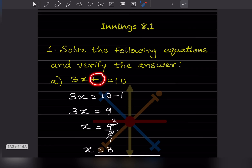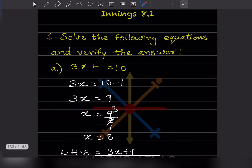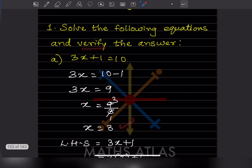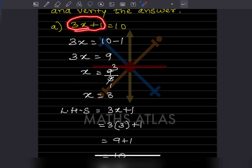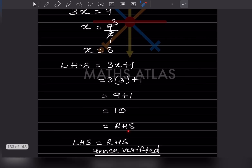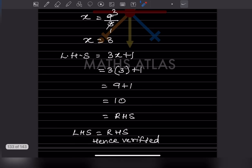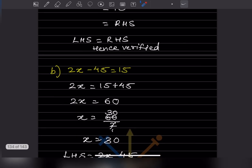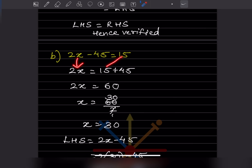So because of plus 1 it becomes minus 1, giving 3x equals 9. Since 3 is multiplied, it becomes division: x equals 9 divided by 3, so x equals 3. Now we verify: LHS is 3x plus 1. Substituting x equals 3: 3 times 3 is 9, plus 1 equals 10, which equals the RHS. So LHS equals RHS — verified.